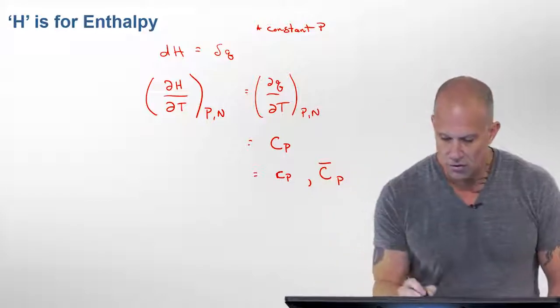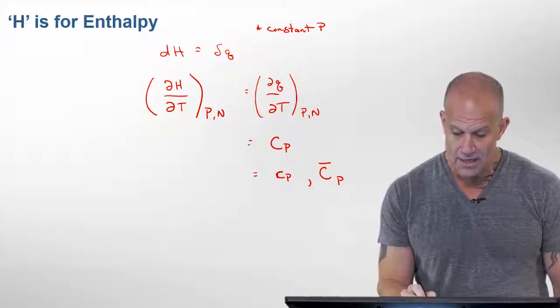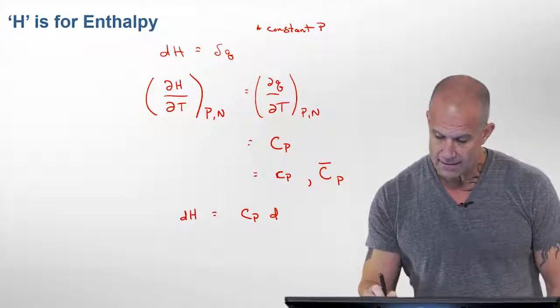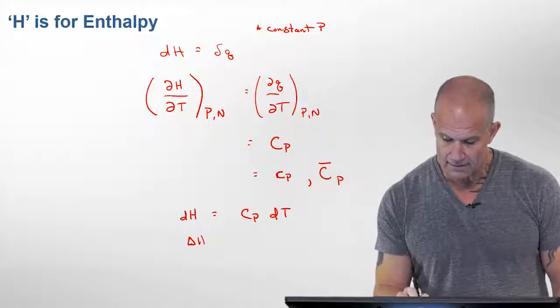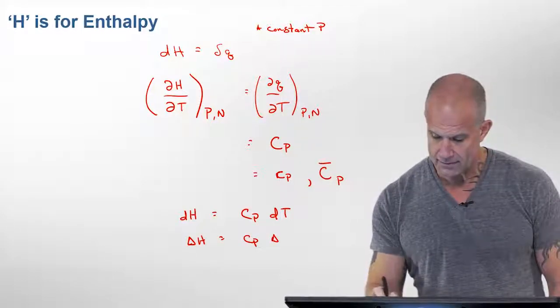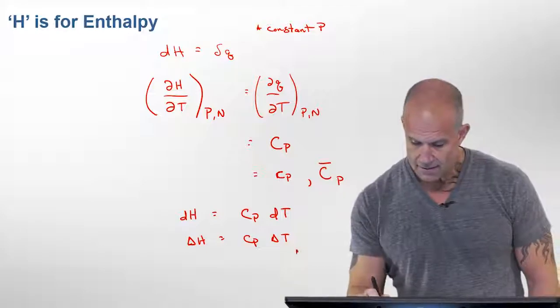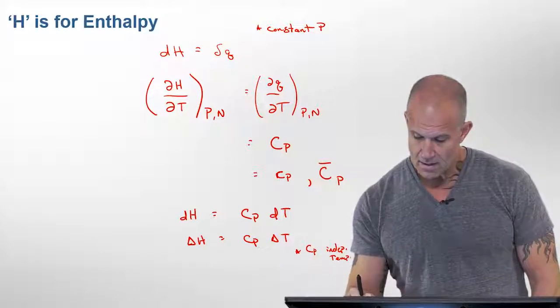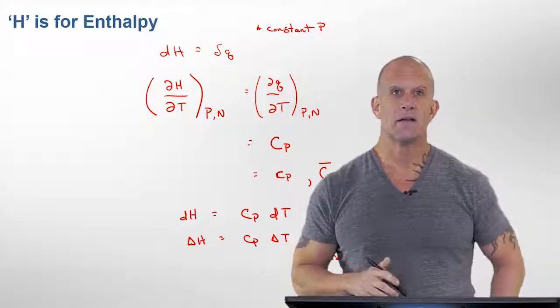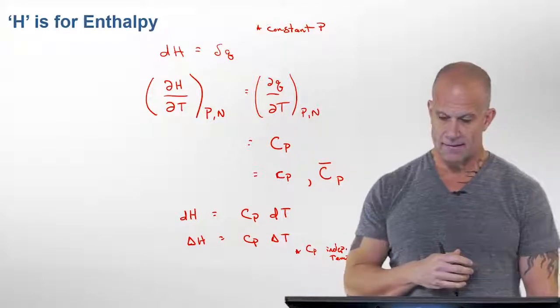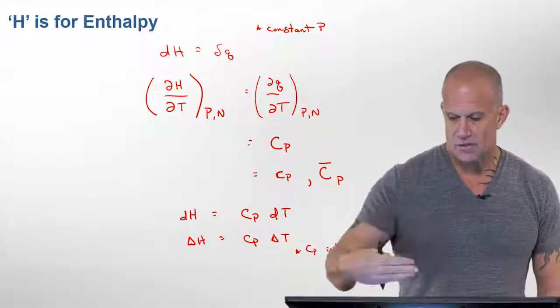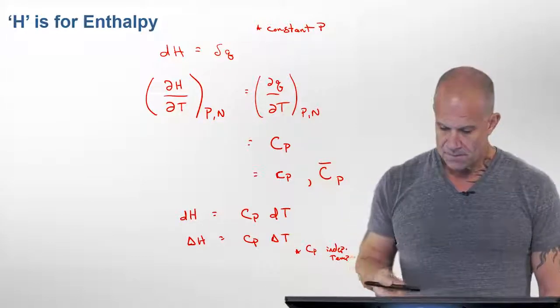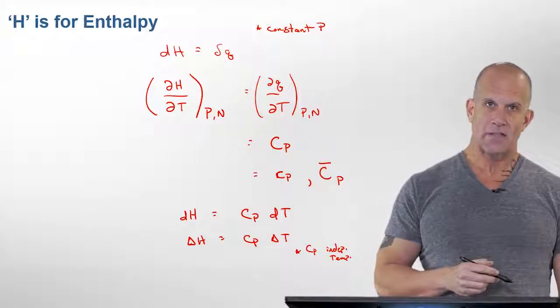So when we start looking at the change in H, it'll go as Cp dT, or delta H will go as Cp delta T, assuming that the heat capacity is independent of temperature. Otherwise, you have to integrate what the temperature dependence of that heat capacity is.